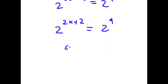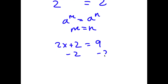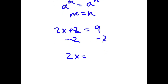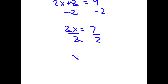So I get 2 to the power of 2x plus 2 is equal to 2 to the power of 9. Now if I have something in the form a to the power of m is equal to a to the power of n, this means that m is equal to n. So in this case, 2x plus 2 is equal to 9. If I subtract 2 on both sides, I get 2x is equal to 9 minus 2, which is 7. And if I divide both sides by 2, I get x is equal to 7 over 2.